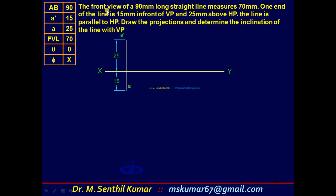The line is parallel to HP, inclined to VP, so in the top view you will get the true length and true angle. The true length is given as 90mm, but the true angle is not given. So you cannot start the top view first. Go through the problem again.